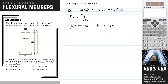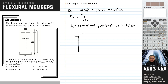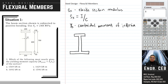Let us first find the moment of inertia. Our section is asymmetrical with respect to the x-axis, so we have to locate the centroid first. However, our section is symmetric with respect to the y-axis, meaning the portion of the section to the left of the y-axis is similar to the portion to the right of the y-axis.